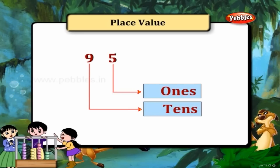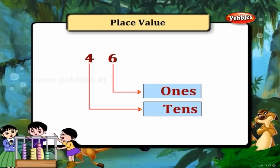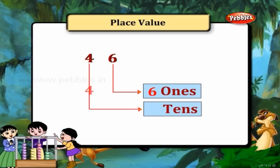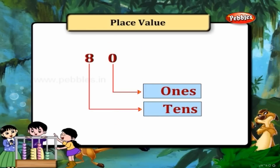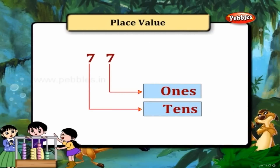95: 5 ones and 9 tens. 46: 6 ones and 4 tens. 80: 0 ones and 8 tens. 77: 7 ones and 7 tens.